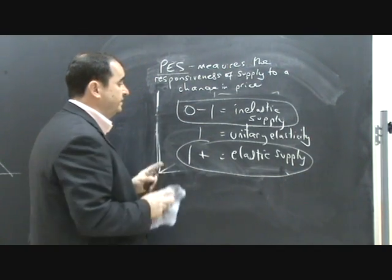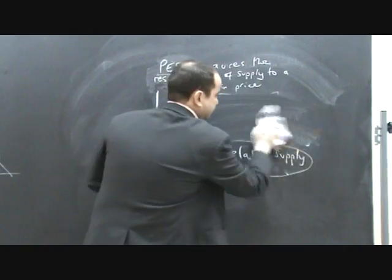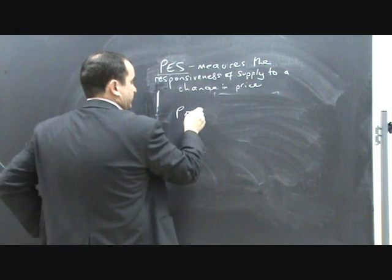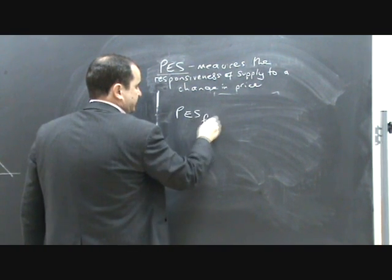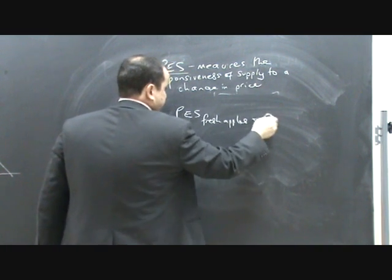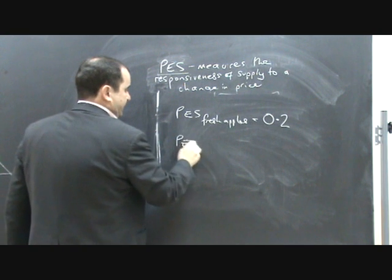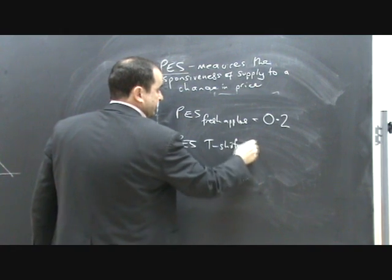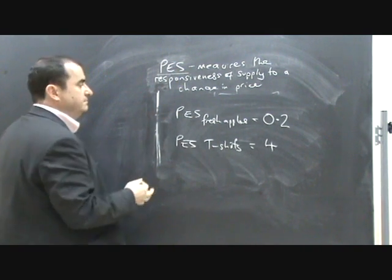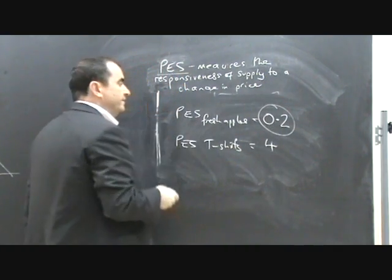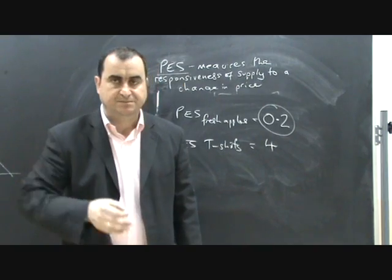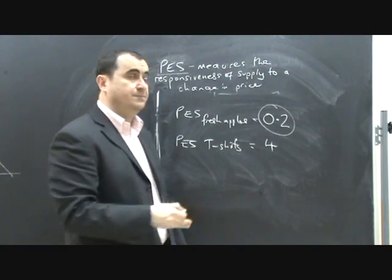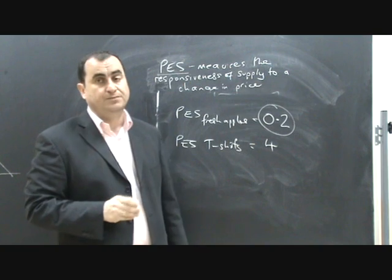Right, let me be a bit more specific about what a PES reading actually means. Imagine that the PES for, let's say, fresh apples is 0.2. What does this actually mean? Well, literally, what this means is that every time price changes by 1%, there will be a 0.2% change in the quantity supplied. So if price goes up by 1%, quantity supplied would rise by 0.2%.